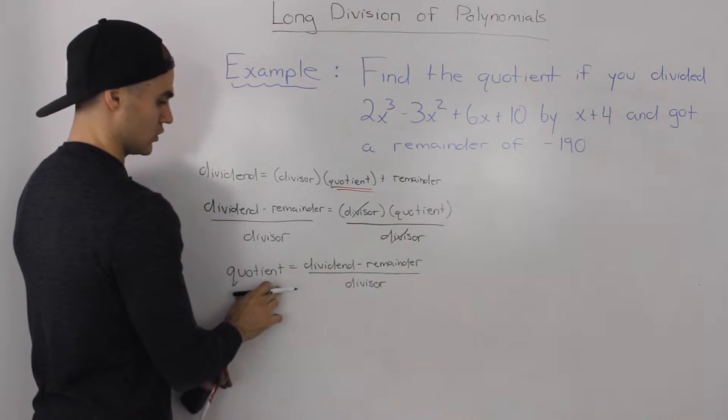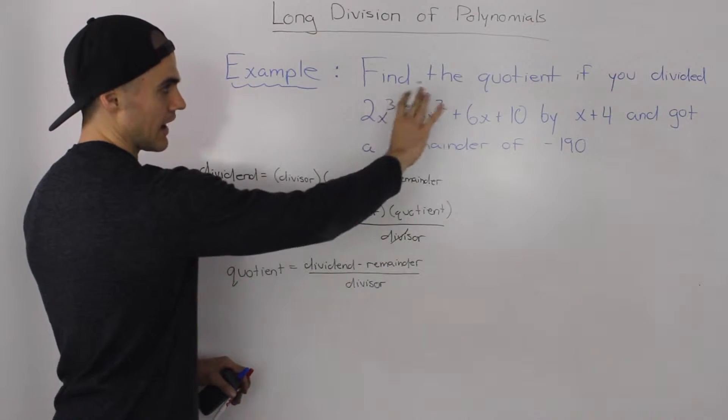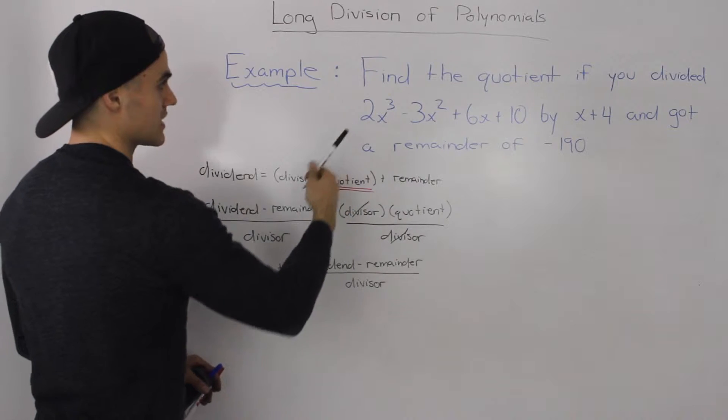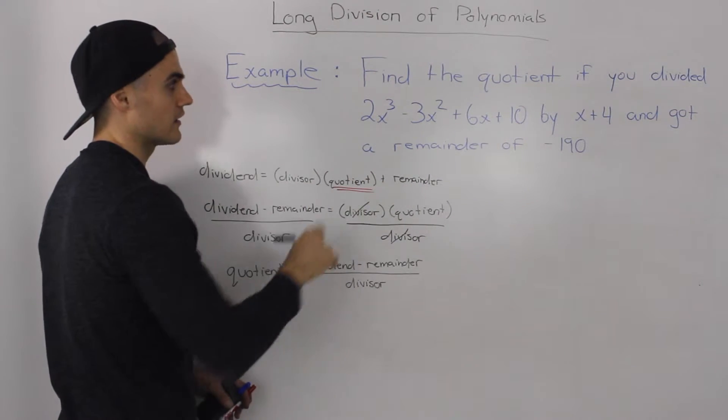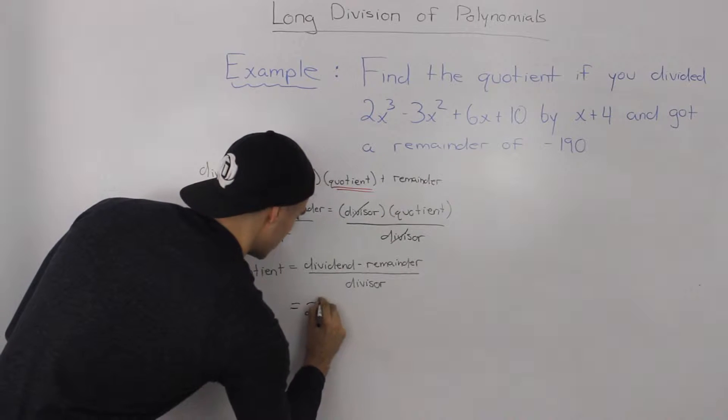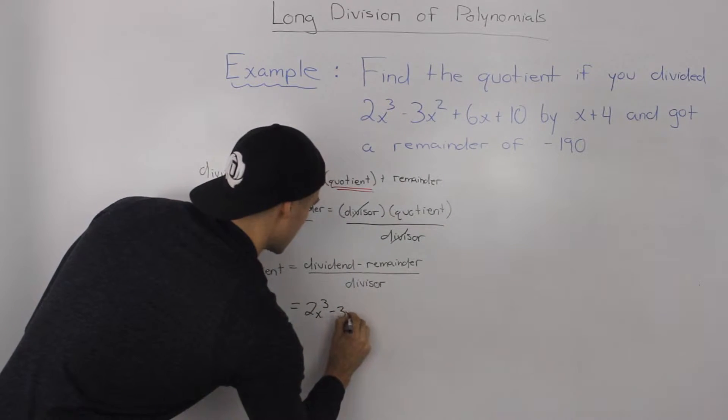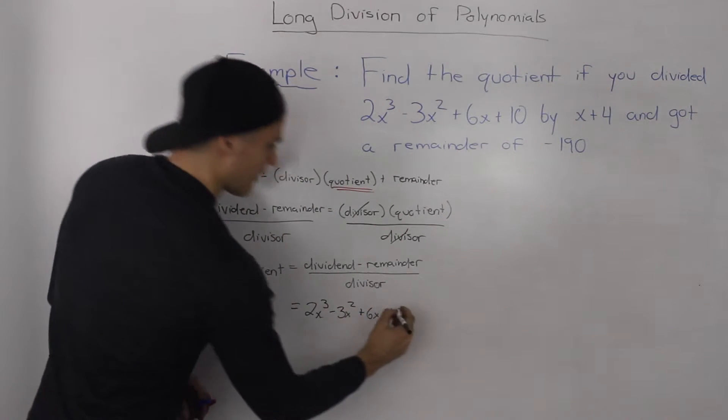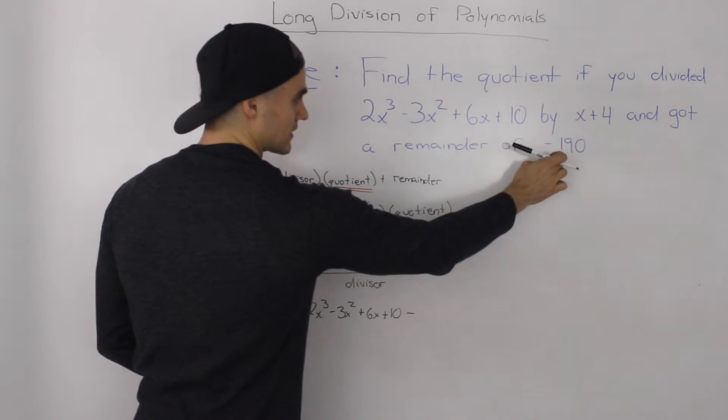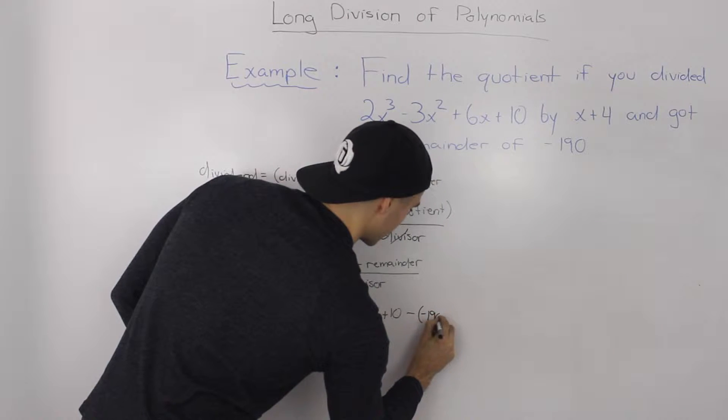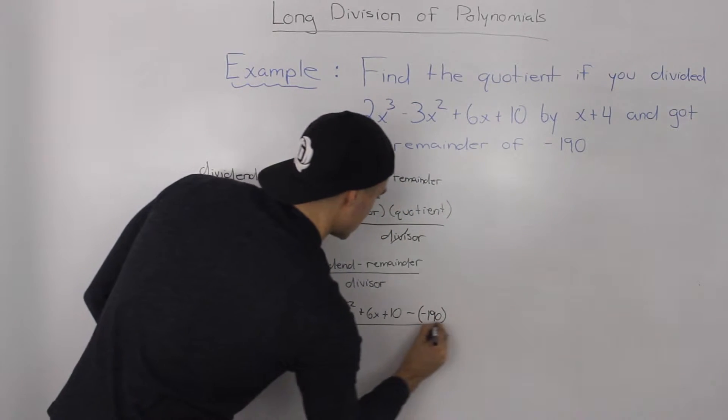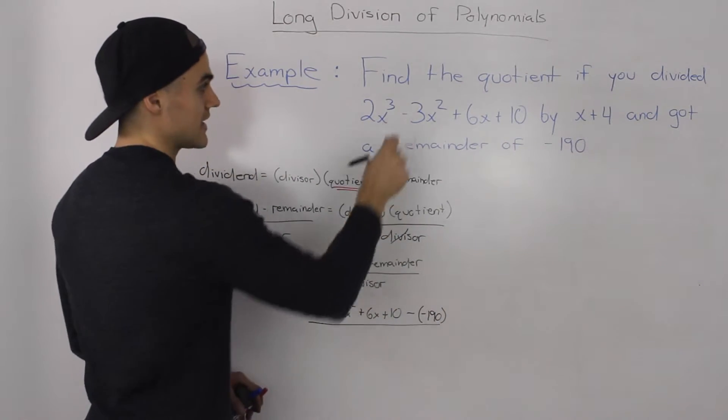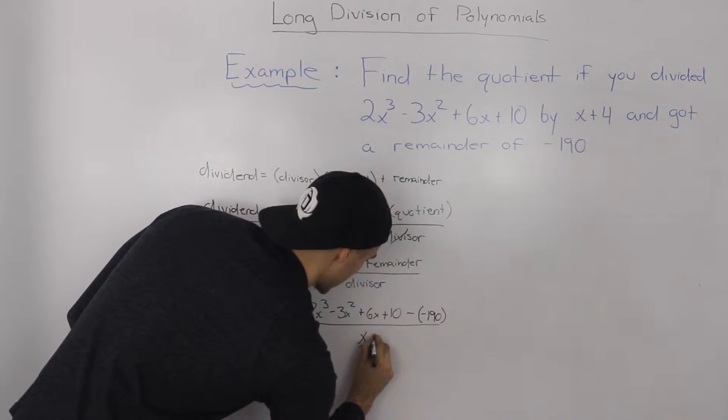We're looking for the quotient so if we take our question here and plug everything into this expression, our dividend is the polynomial that we're dividing, so it's 2x cubed minus 3x squared plus 6x plus 10. Then we are subtracting the remainder so we're subtracting negative 190. And that's going to be all over our divisor which is x plus 4.